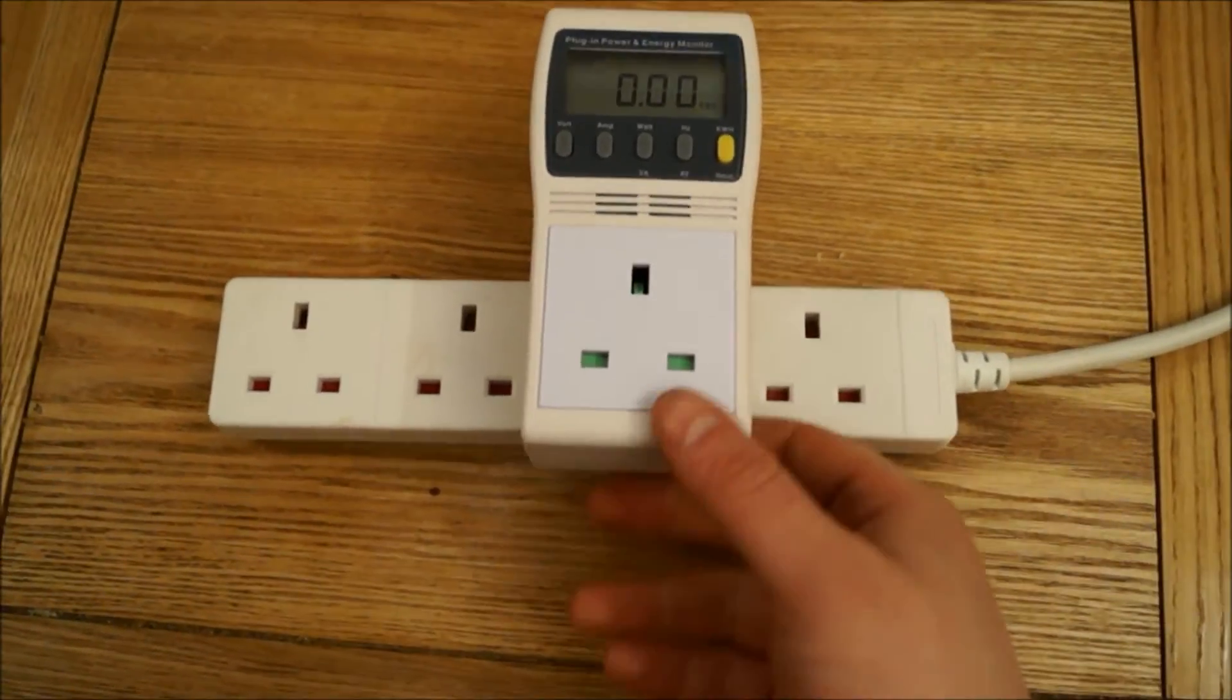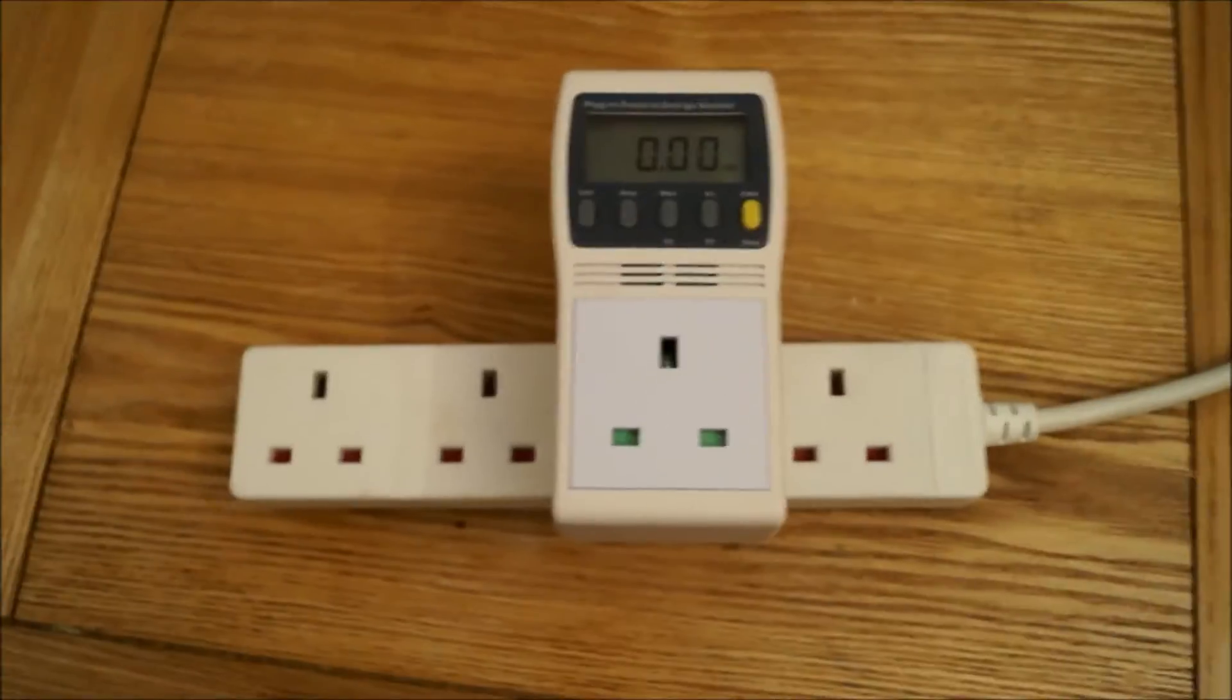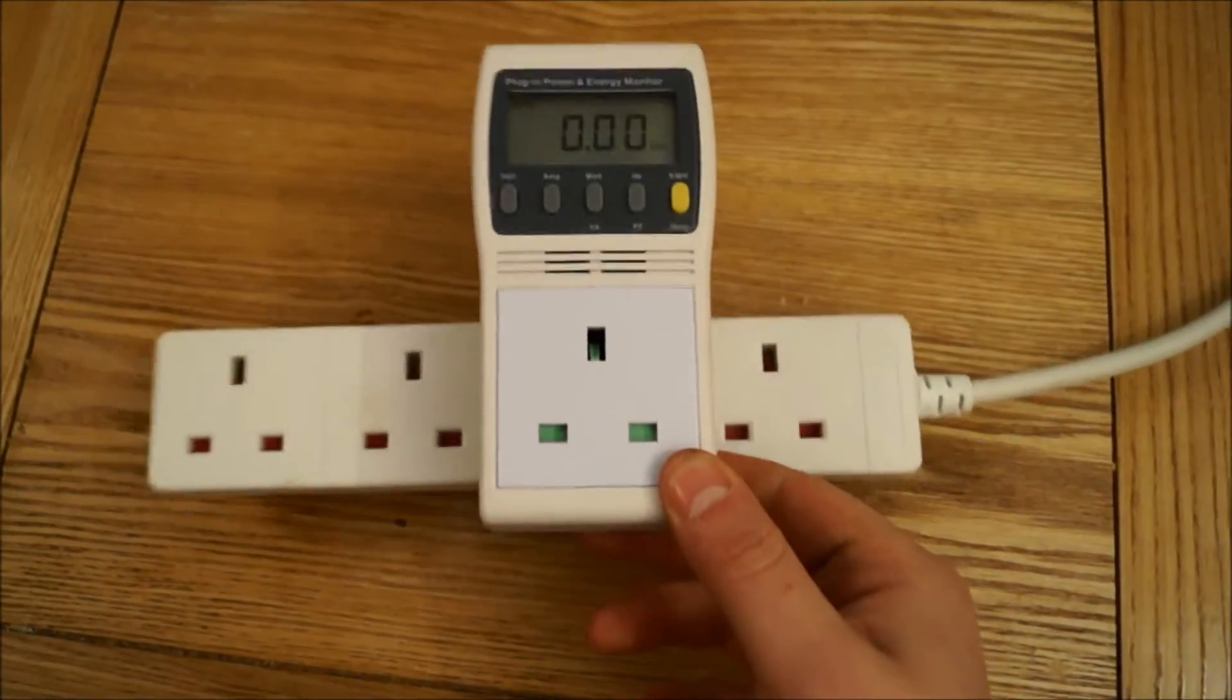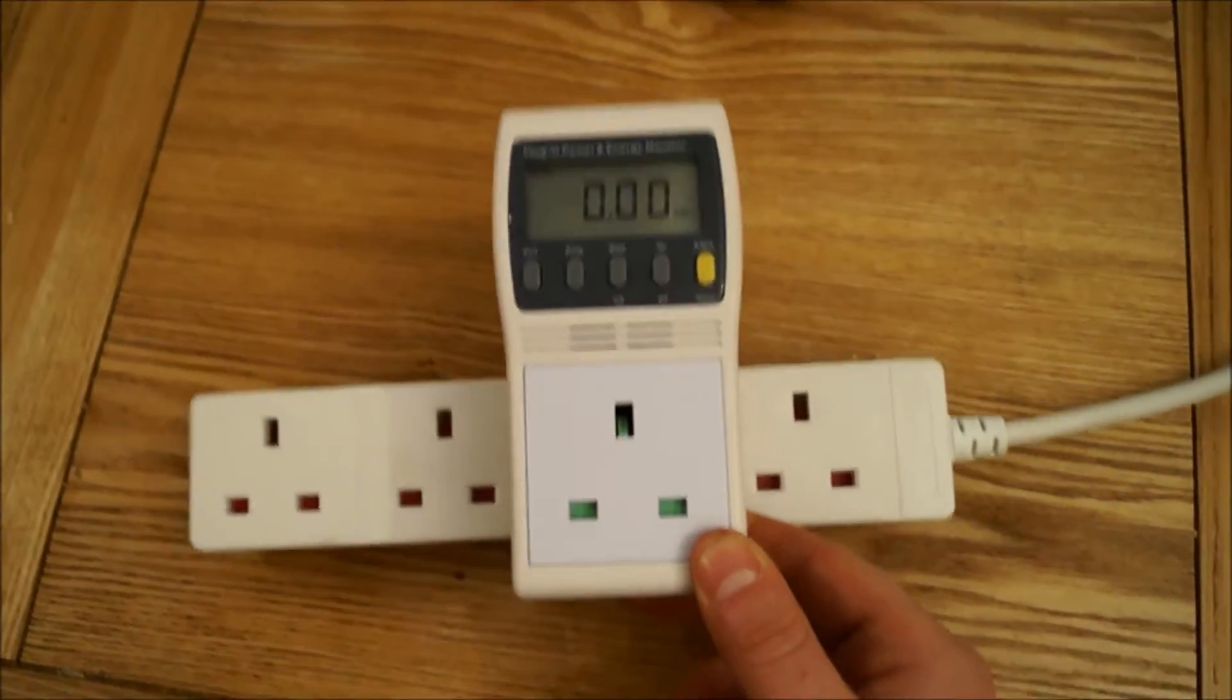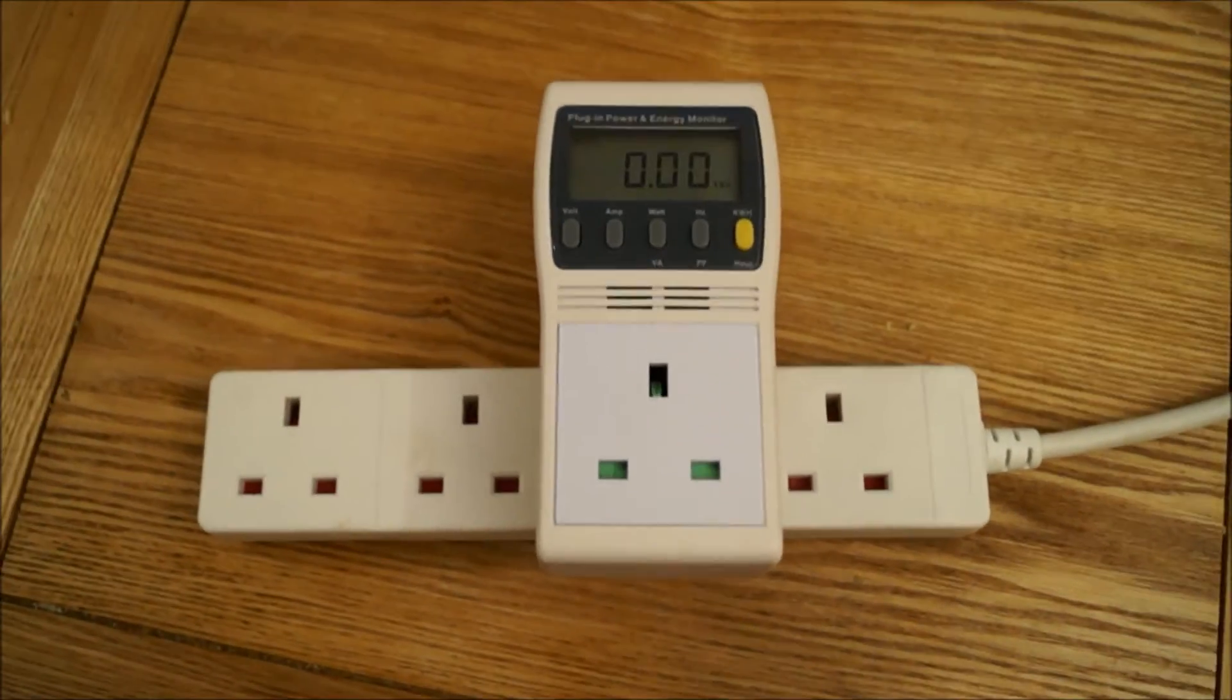But unlike the clamp meter, you can't simply use this for everything. It can only be used for devices that have a plug. So for your oven that is wired straight into its own circuit, you can't work out how much current your oven is drawing because it doesn't simply have a plug. But this is actually very handy to have just to be able to easily work out how much current something draws.